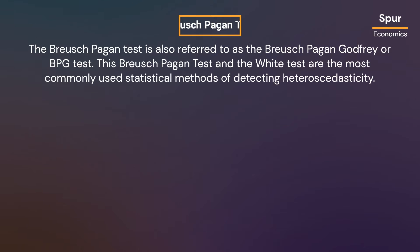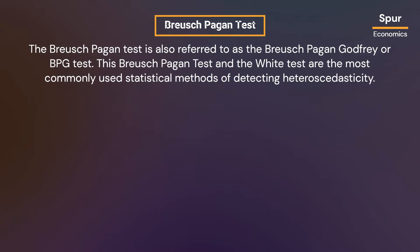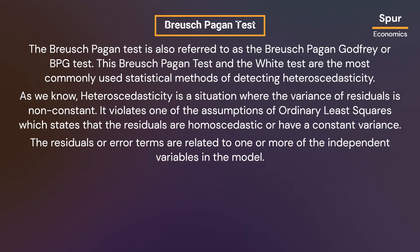The Breusch-Pagan test is also referred to as the Breusch-Pagan-Godfrey or BPG test. The Breusch-Pagan test and the White test are the most commonly used statistical methods of detecting heteroscedasticity. Heteroscedasticity is a situation where the variance of residuals is non-constant, violating one of the assumptions of ordinary least squares which states that the residuals are homoscedastic or have a constant variance.